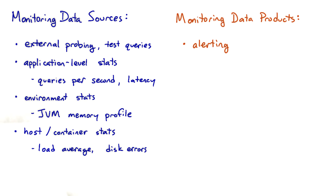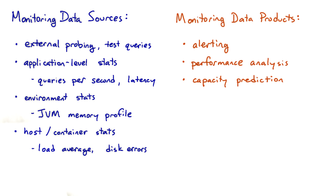There are also a number of different data products that a monitoring system can provide. The one everybody knows about is alerting — getting a page saying the system is too slow. But your monitoring system can also provide charts and graphs for performance analysis, such as 'this release is 10% faster than the last one,' and also for capacity prediction. For instance, if it takes 10 instances to support 1,000 transactions per second, then scaling to 2,000 transactions per second should require 10 more instances.